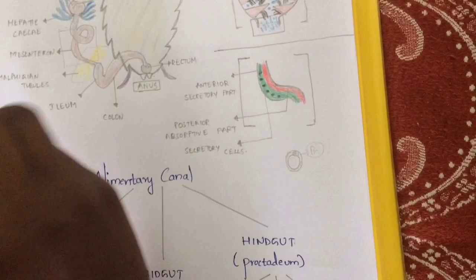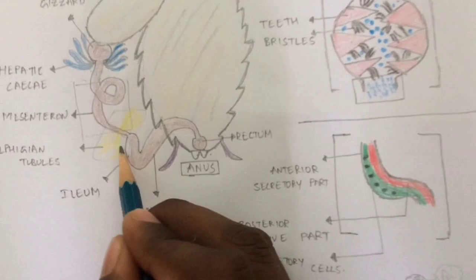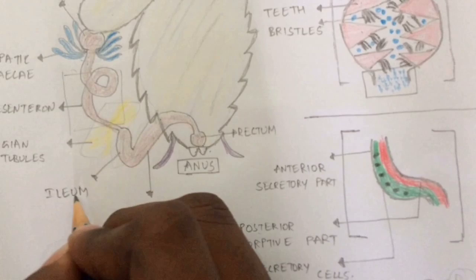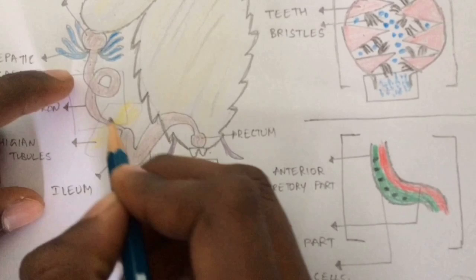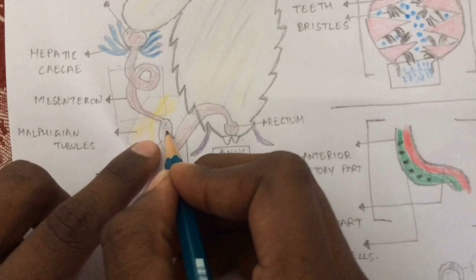The hindgut mainly consists of three parts: ileum, colon, and rectum. The ileum mainly receives food material from the midgut, and also receives uric acid which is secreted by the Malpighian tubules. It collects that uric acid from the Malpighian tubules and also collects food material from the mesentron.